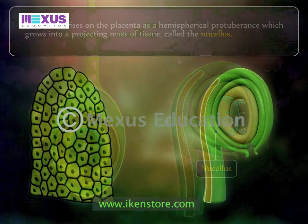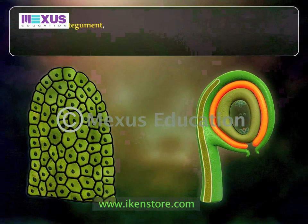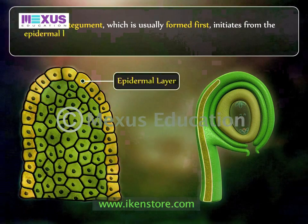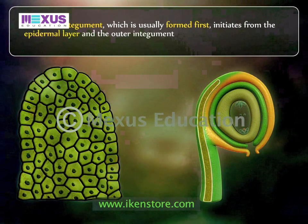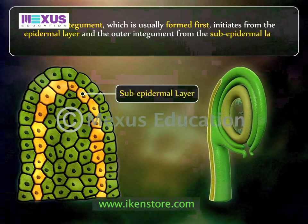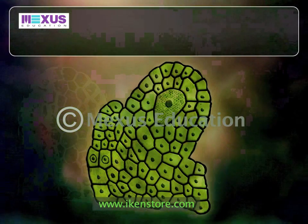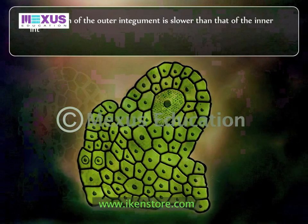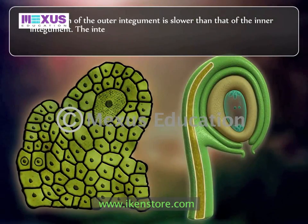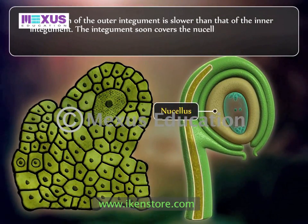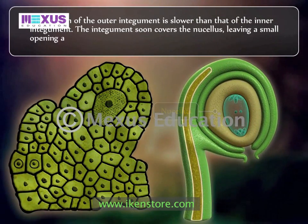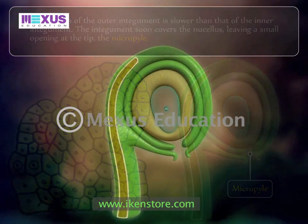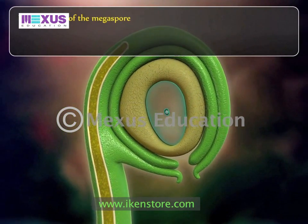Now let us understand how the ovule and its structure develops. The ovule arises on the placenta as a hemispherical protuberance, which grows into a projecting mass of tissue called the nucellus. The inner integument, which is usually formed first, initiates from the epidermal layer, and the outer integument from the sub-epidermal layer. The integument soon covers the nucellus, leaving a small opening at the tip — the micropyle.